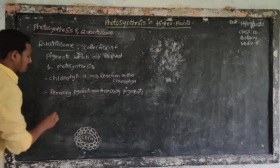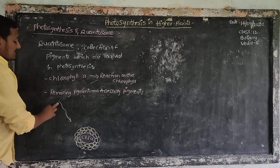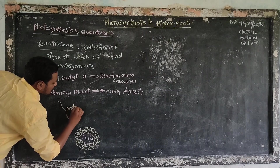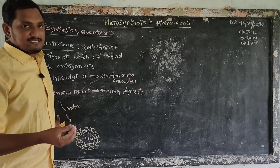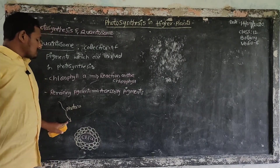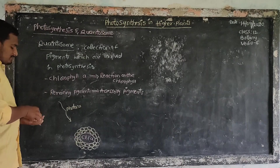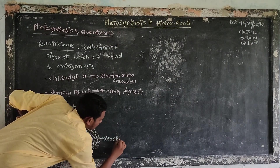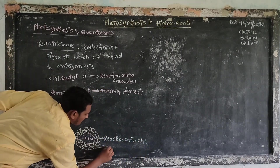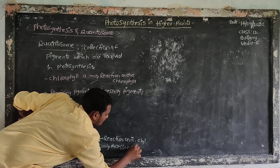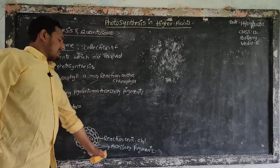Wavelength or sunlight will fall on this photosystem. This sunlight is called photons. Sunlight energy is known as photons. That energy is called photons. These photons or sunlight fall on the reaction center chlorophyll as well as accessory pigments. The reaction center chlorophyll is in the middle and the remaining are accessory pigments.